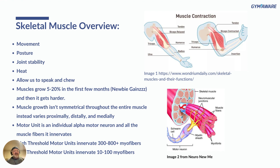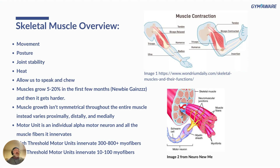The motor unit is an individual alpha motor neuron and all the muscle fibers it innervates. High-threshold motor units have alpha neurons that innervate 300 to possibly thousands of myofibers, while low-threshold motor units innervate 10 to 100 myofibers — those are the ones we use just walking around. Some of us might go our whole lives never using the high-threshold motor units unless we make a maximal effort.